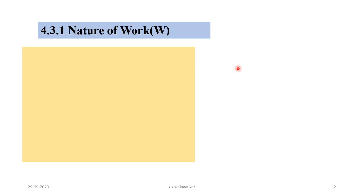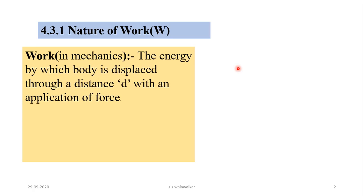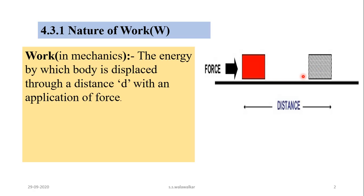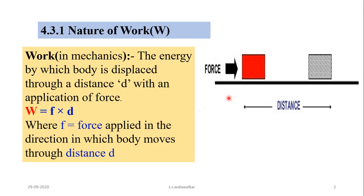Now we will study what is meant by work and how energy is transferred from system to surrounding or from surrounding to system in the form of work. According to mechanics, work is the energy by which a body is displaced through a distance d by application of force. When you apply force in a direction, the body moves through distance d. Therefore W = F × d, where F is the force applied in the direction of displacement.